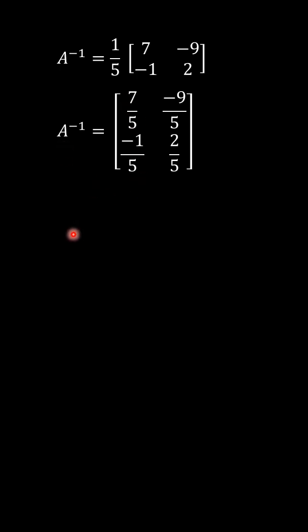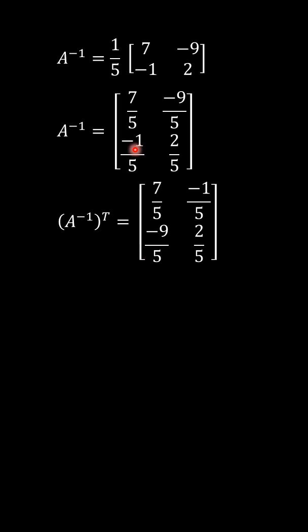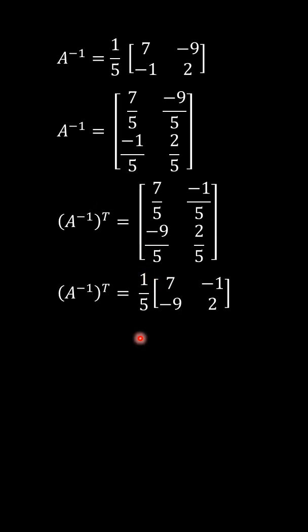Next, we have to get the transpose of A inverse. For this, we have to convert this row into a column and this row into a column. Now we have the transpose of A inverse. Next, we take out 1 over 5 as a common factor. We get the transpose of A inverse.